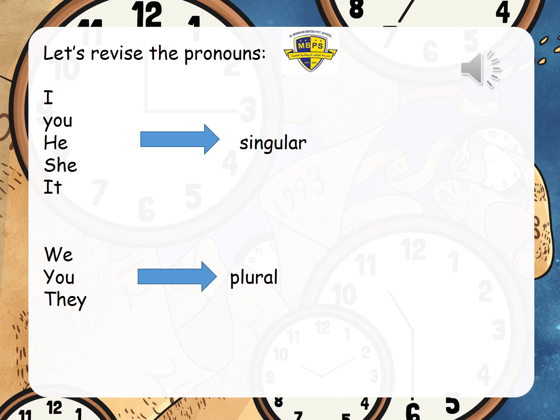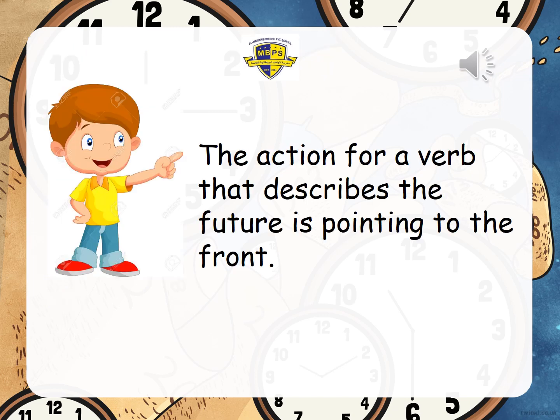Now, the action for a verb that describes the future is pointing to the front. If we're in the classroom and I say 'I'm going to go to school tomorrow,' look how it's pointing forward — that means the future. In the past you put your finger behind your head, meaning it's gone. And present means you point down.